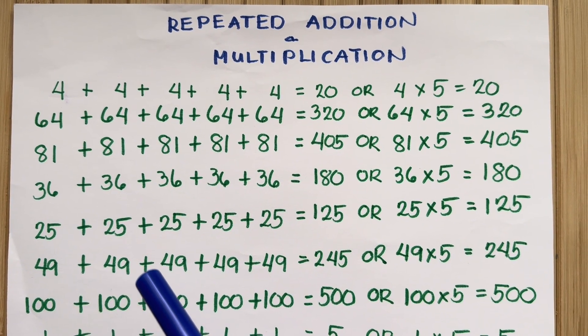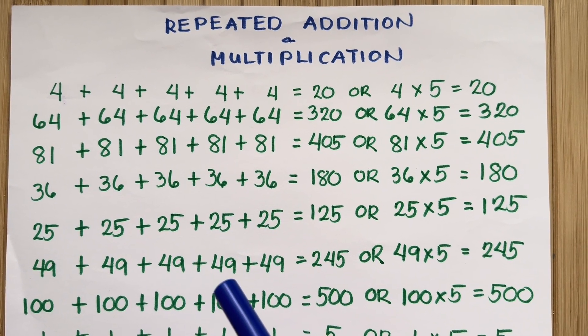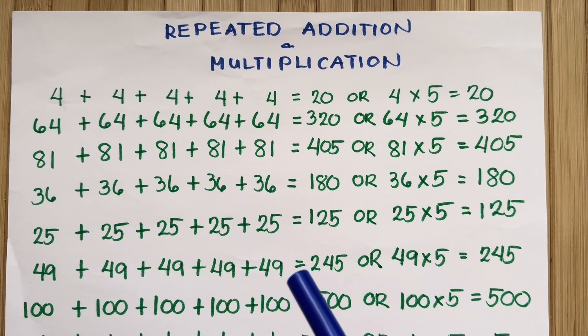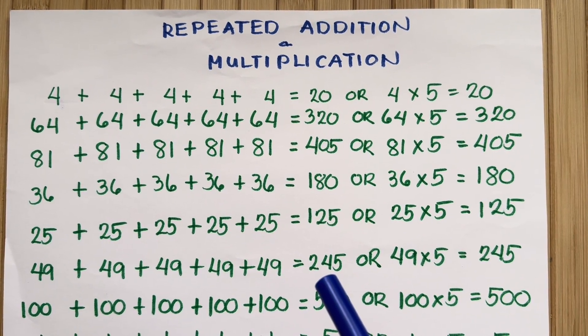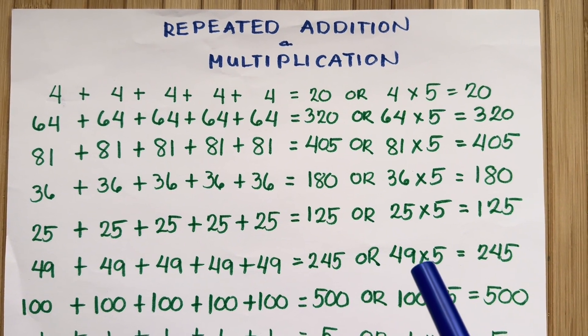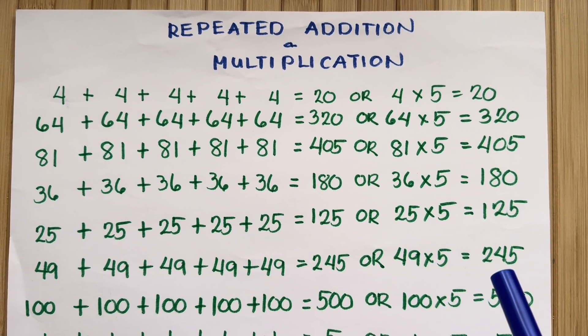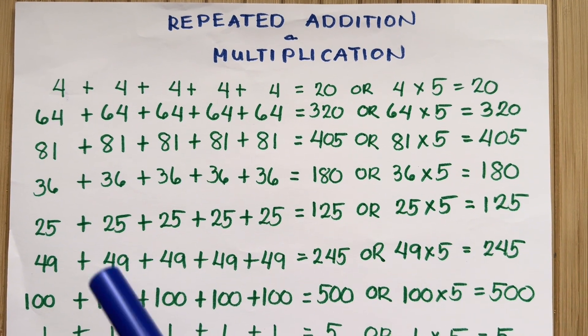49 plus 49 plus 49 plus 49 plus 49 is equals to 245. Or, 49 times 5 is equals to 245.